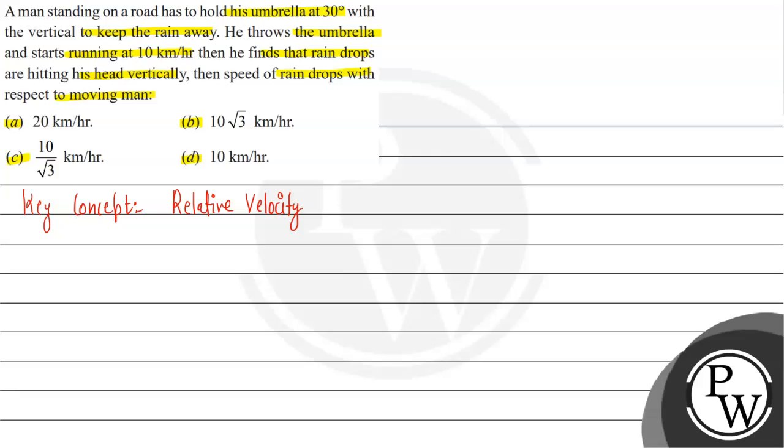When standing on the road, he holds his umbrella at 30 degrees with the vertical to keep the rain away. The velocity of rain is making an angle of 30 degrees with the vertical. This angle should also be equal to 30 degrees. This is the velocity of the rain with respect to the man when he is standing still.